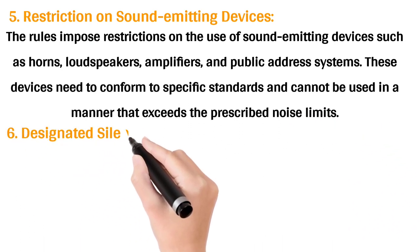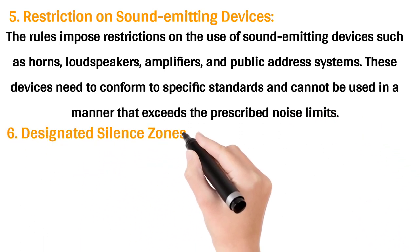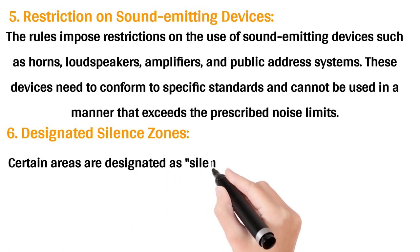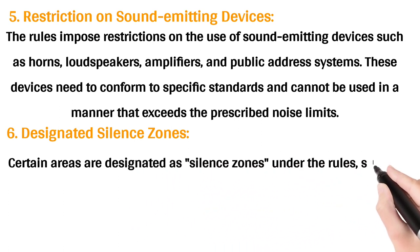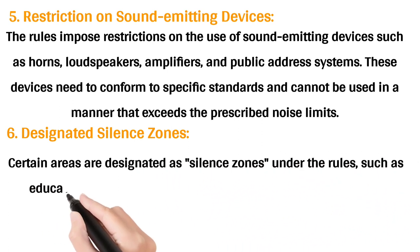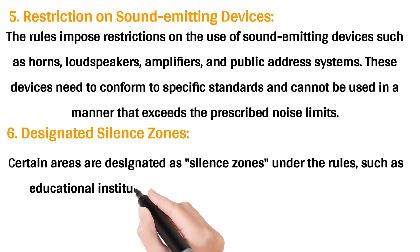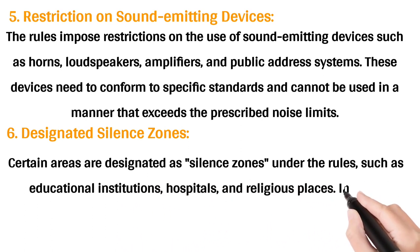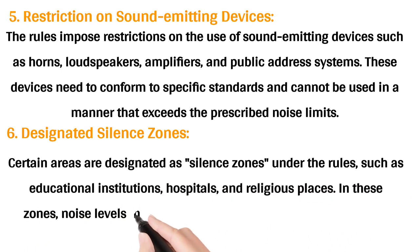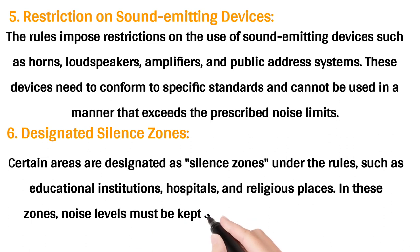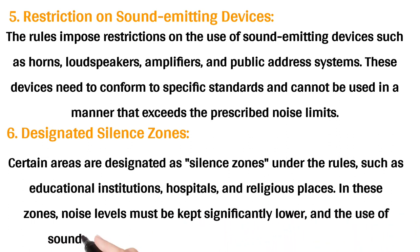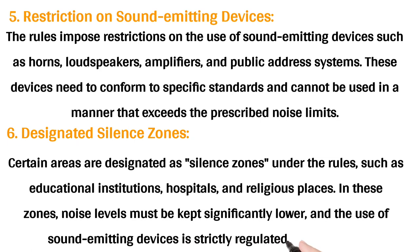6. Designated Silence Zones: Certain areas are designated as silence zones under the rules, such as educational institutions, hospitals, and religious places. In these zones, noise levels must be kept significantly lower, and the use of sound emitting devices is strictly regulated or prohibited.